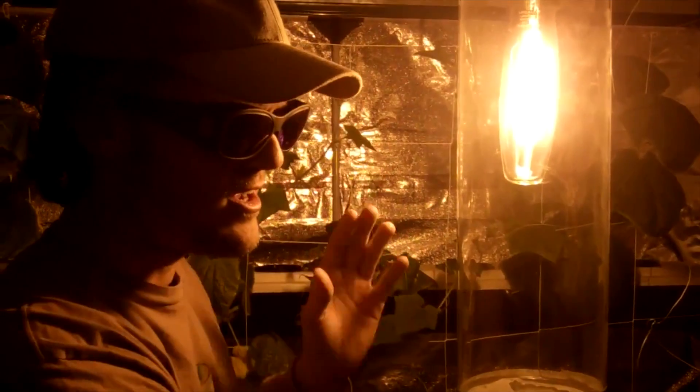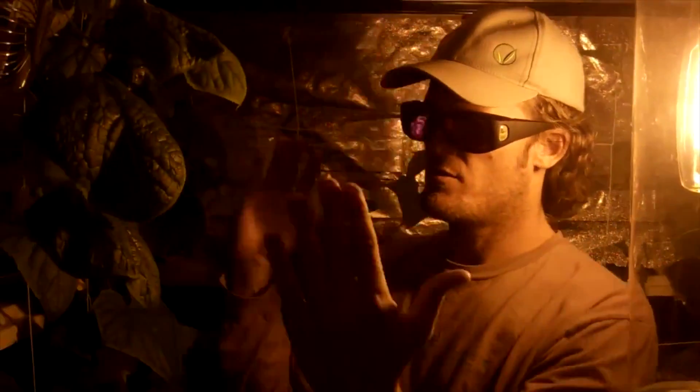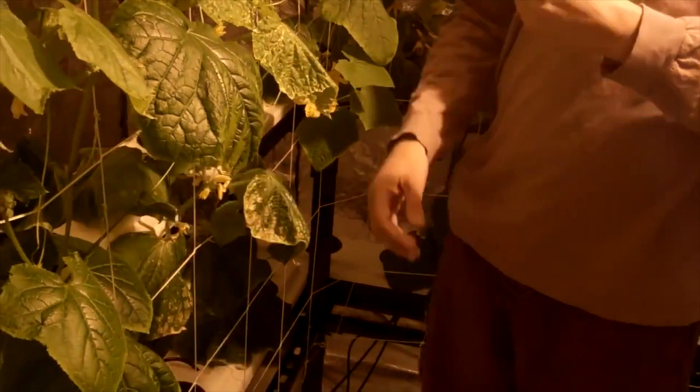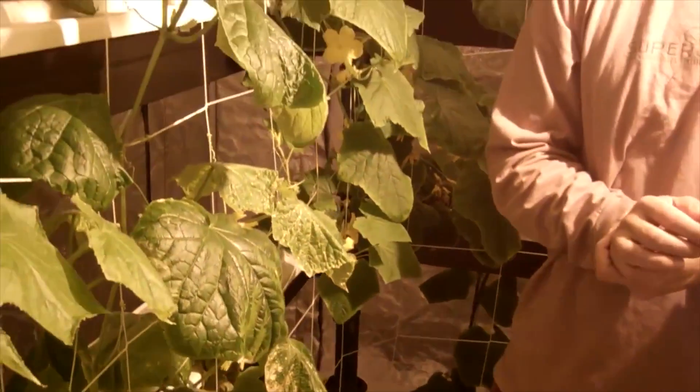So essentially, each one of these vertical walls, imagine on the ground, it's basically a sea of green growing up. That way you can triple your yields per watt per square foot.